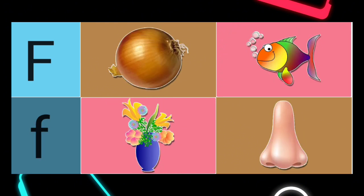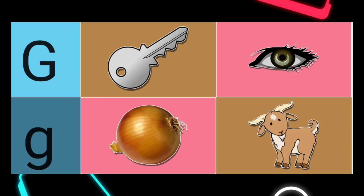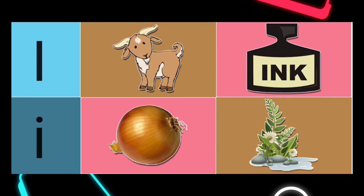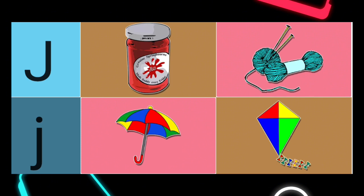F is for. Right answer: F is for Fish. G is for. Right answer: G is for Goat. H is for. Right answer: H is for Hen. I is for. Right answer: I is for Ink.